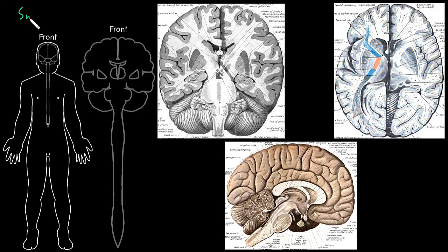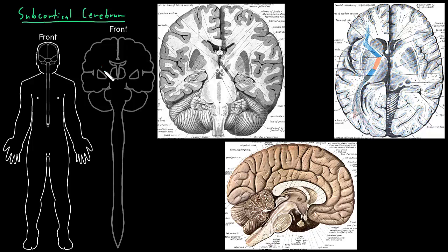In this video, I'm going to talk about the subcortical cerebrum — the deep part of the cerebrum. Recall that the cerebrum is the top part of the brain, and inside the cerebrum we have both gray and white matter. The entire cerebrum is covered with gray matter that we call the cerebral cortex. These deep structures, like deep white matter and deep gray matter nuclei, we call subcortical because they're deep to — beneath — the cerebral cortex.